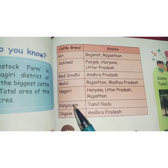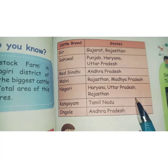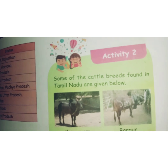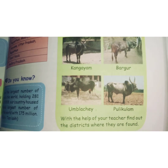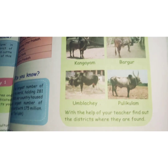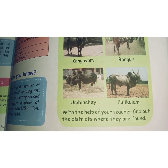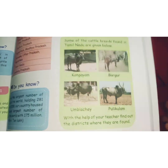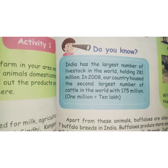This table is quite important — you have to learn it well. Activity: Some of the cattle breeds found in Tamil Nadu are given below — Kangayam, Bargur, Amblachery, and Pulikulam. With the help of your teacher, find out the districts where they are found. You can browse the internet with their names and find out. Let me know your answers.